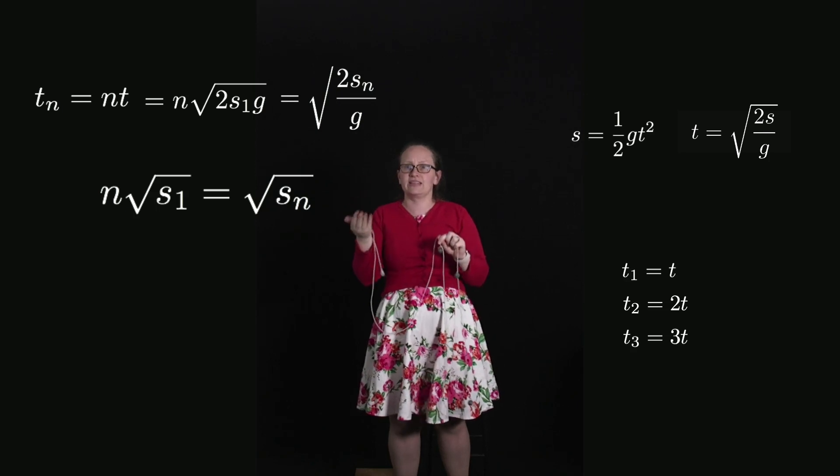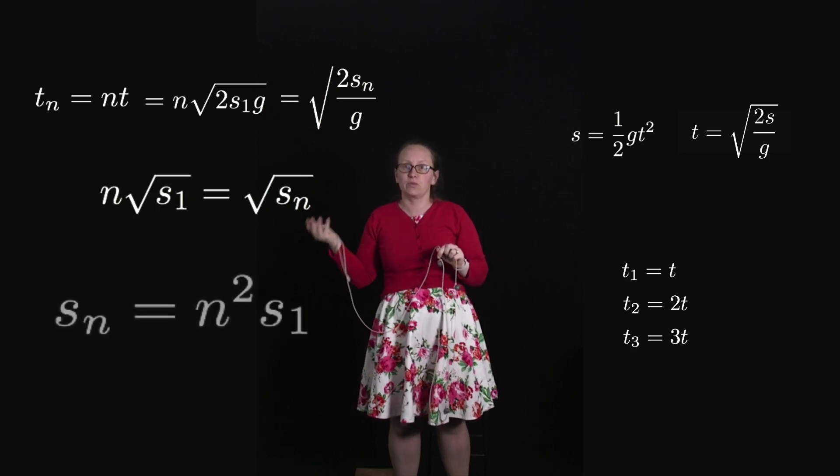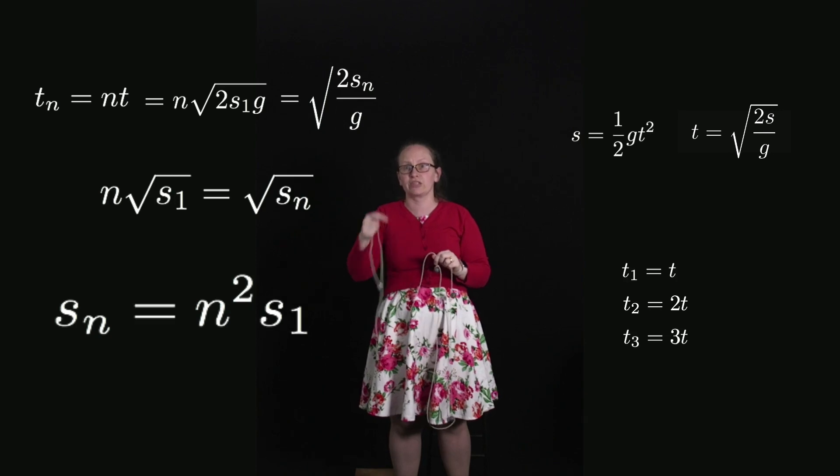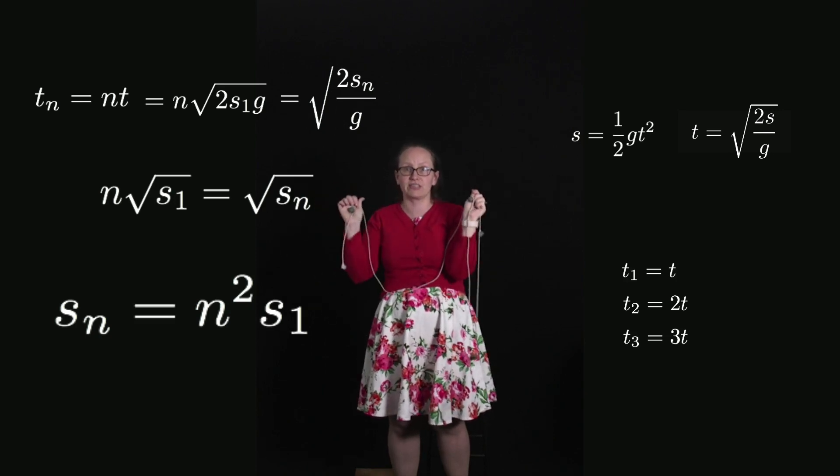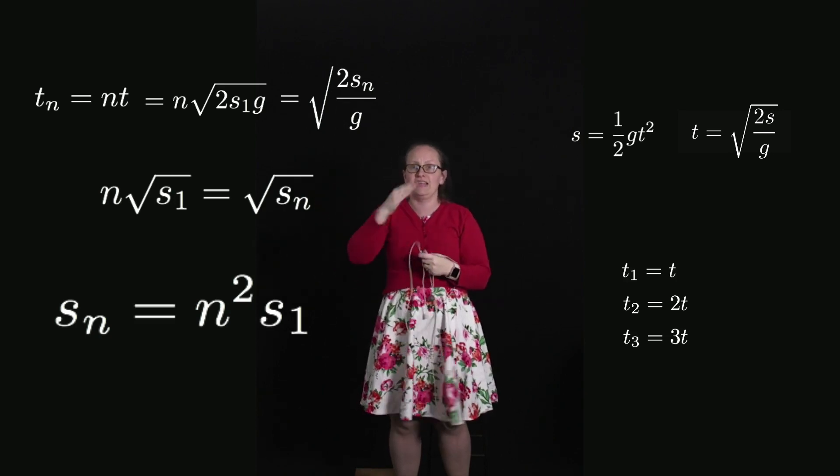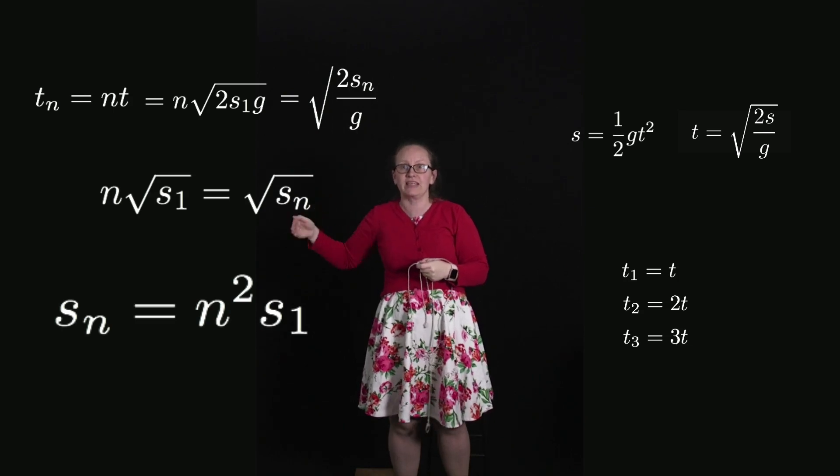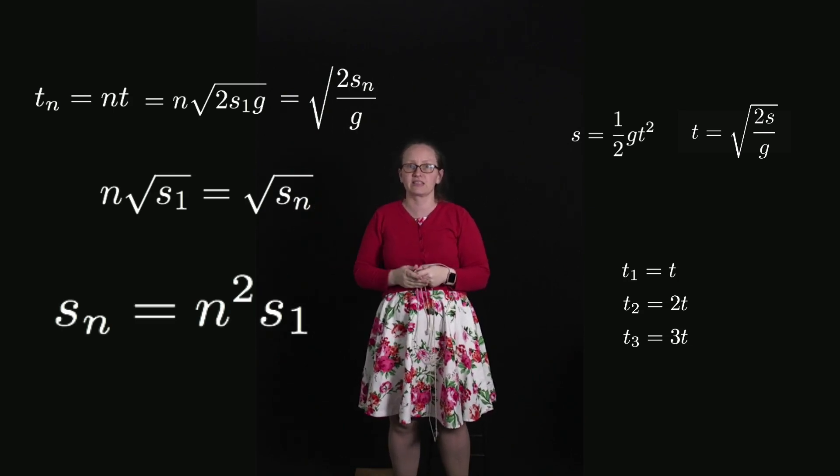So sₙ = n²s₁. Using this, we can work out where to place our masses on the piece of string to get a constant frequency noise as the masses fall.